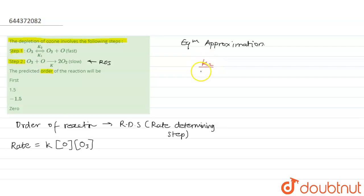The k2 by k1 will be equal to [O2][O] divided by [O3]. Okay, so from this we can get the concentration of O. This O3 will go to that side and also O2 will come below to become k2k1[O3] divided by [O2].